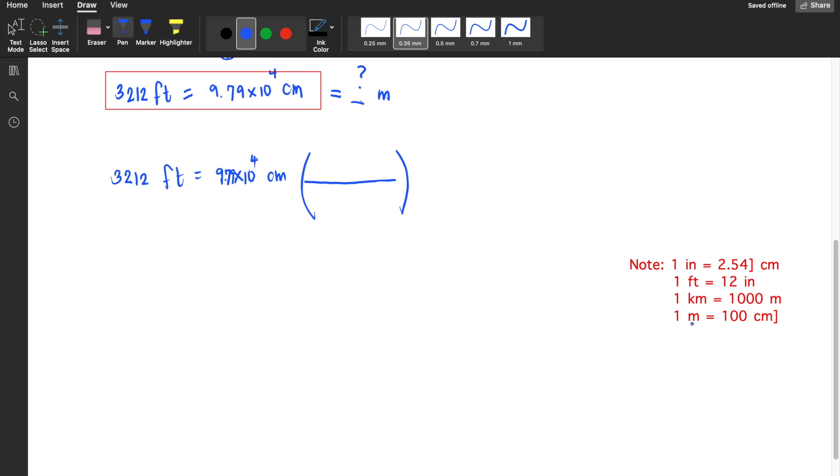Since centimeters is in the numerator, I'll write centimeters in the denominator and the desired unit, meters, in the numerator. Using the conversion factor, one meter equals 100 centimeters. I can cancel this out, yielding an answer of 979 meters. So almost a kilometer in height.